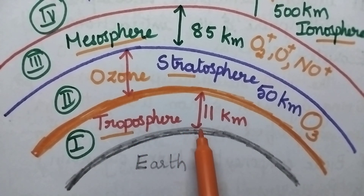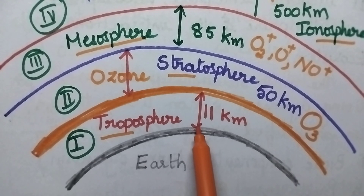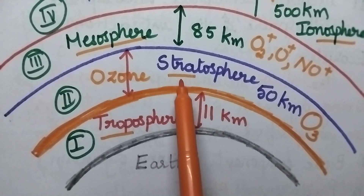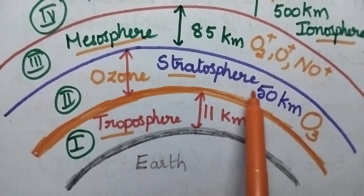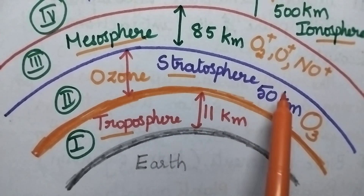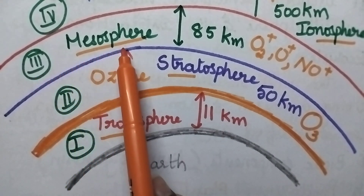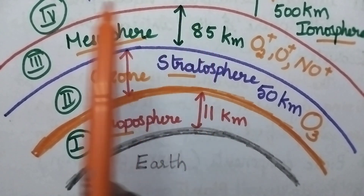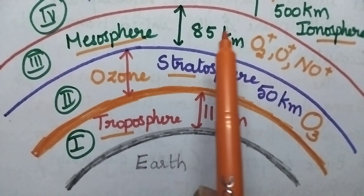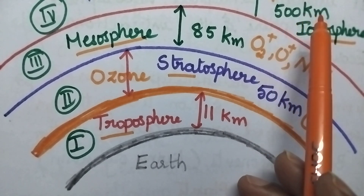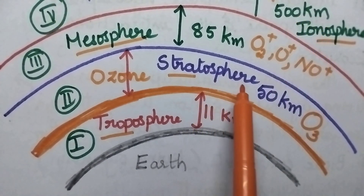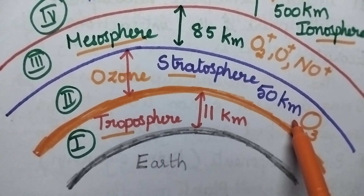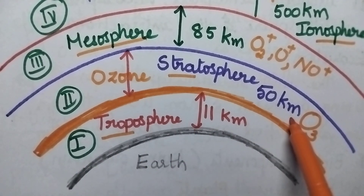The troposphere extends up to 11 kilometers from the surface of the earth. The second layer is called stratosphere and it extends up to 50 kilometers. The third layer is called mesosphere and it extends up to 85 kilometers. The fourth layer is called ionosphere and it extends up to 500 kilometers. Coming to the stratosphere, the major element present in it is ozone.